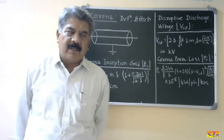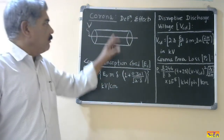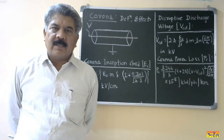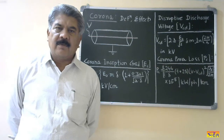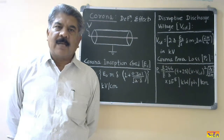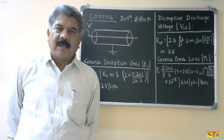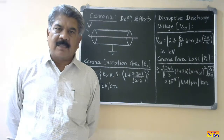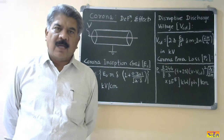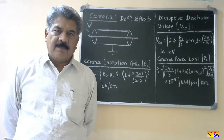Today, I will discuss about the corona. Corona also occurs in case of non-uniform electric field. That is one of the types of partial discharges. I will discuss the partial discharge types in detail afterwards. Today, I will discuss only the corona.